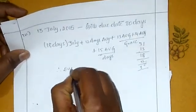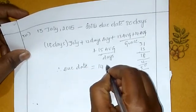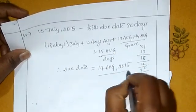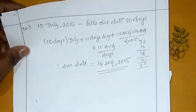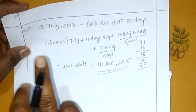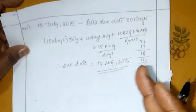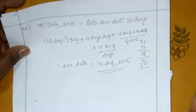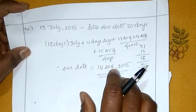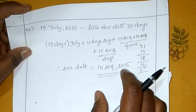Therefore, due date is equal to 14th August 2015. For national holidays, we go one day before; for emergency holidays, we go the next day. This is how we calculate the due date. I hope everyone understood. Thank you.